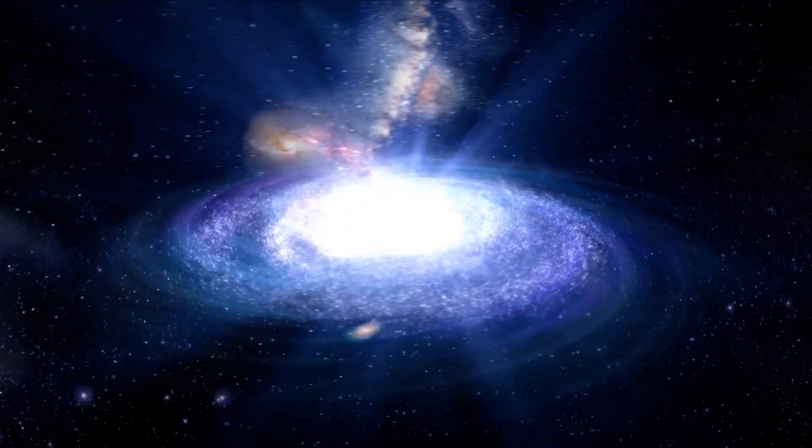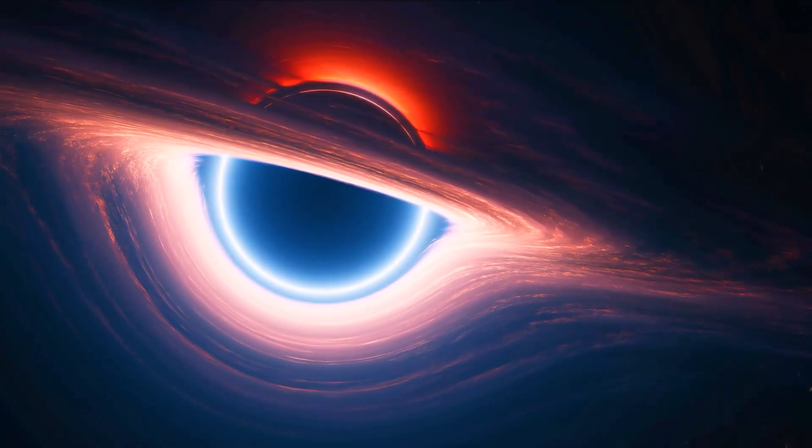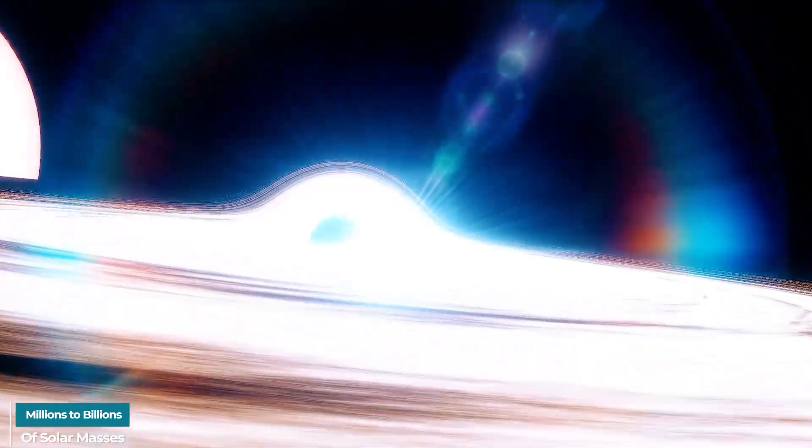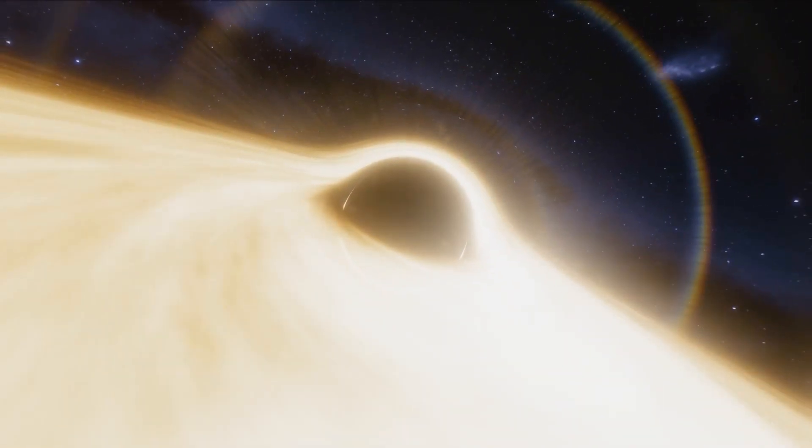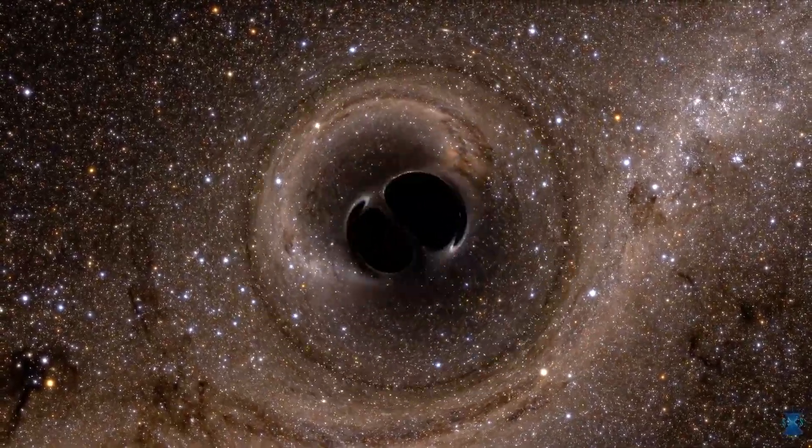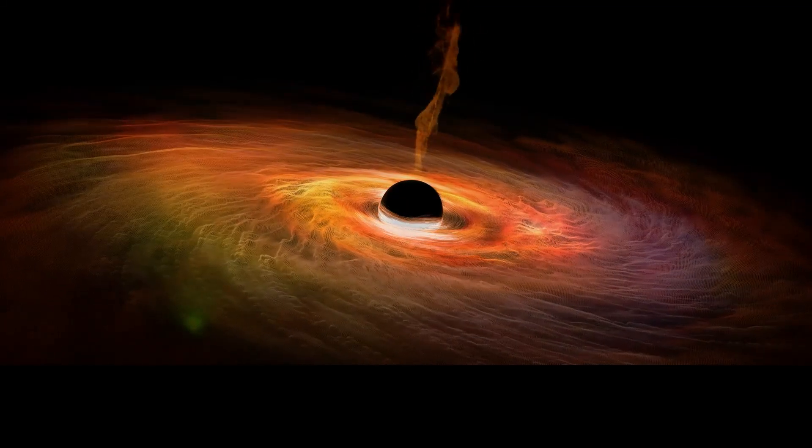Most galaxies, including our own Milky Way, include supermassive black holes at their center. These black holes' masses range from millions to billions of solar masses. Their formation process is still a topic of research, but they may have formed through the merger of many tiny black holes and the accretion of gas from their host galaxy.